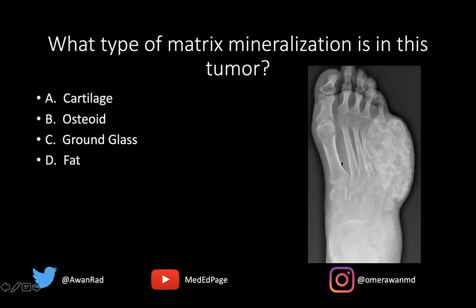This is exactly what a chondroid tumor looks like in the form of rings and arcs. So the answer here is cartilage. This is actually a chondrosarcoma — a nice example of what a malignant cartilage tumor can look like. Five years ago it was very subtle, but it showed very expansive growth over the course of years.